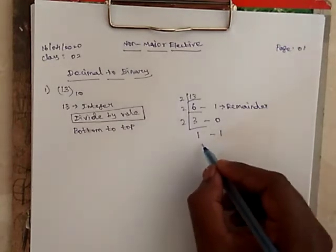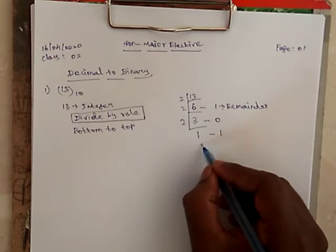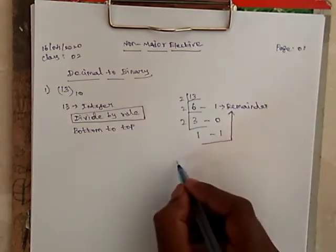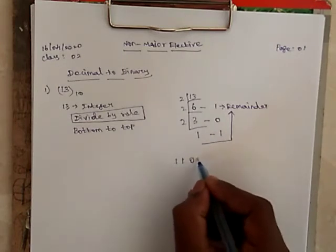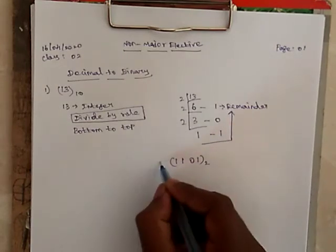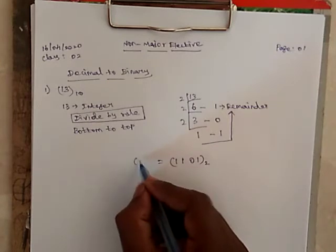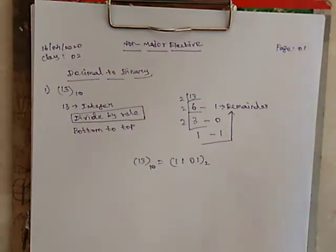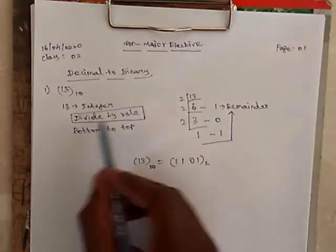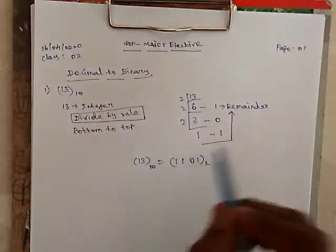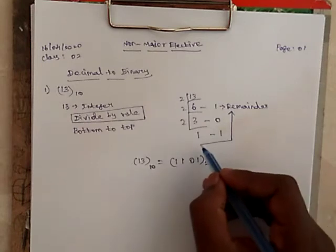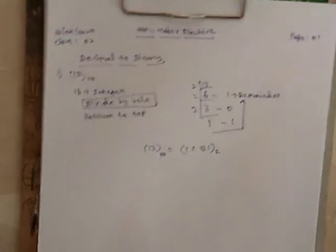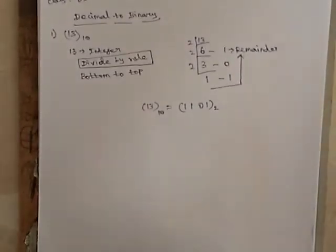To get the answer, we have to follow a pattern of bottom to top. That is, 1, 1, 0, 1, base 2. This is our answer. So, simply we have to divide the integer by 2, and we have to write the answer from bottom to top. So, this is our answer.